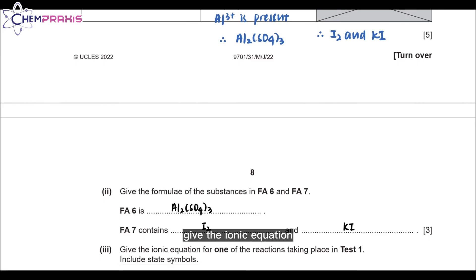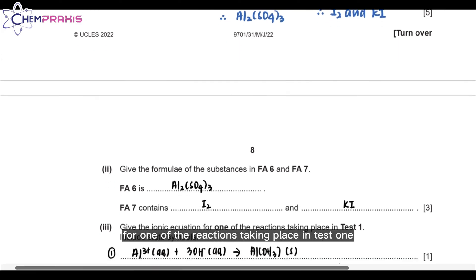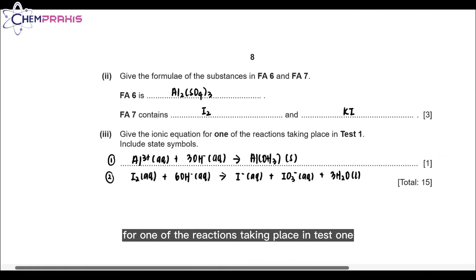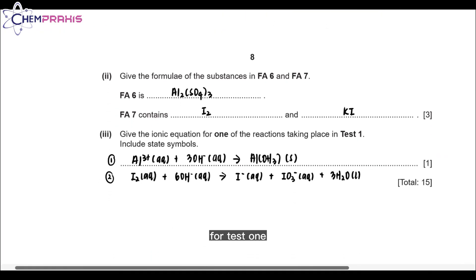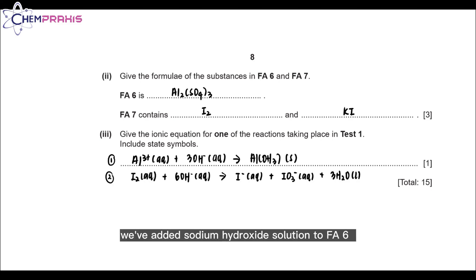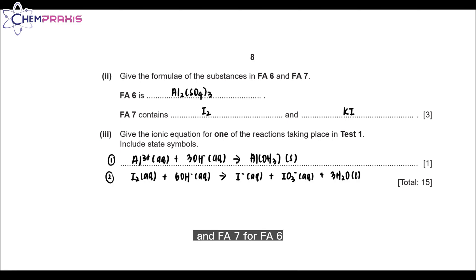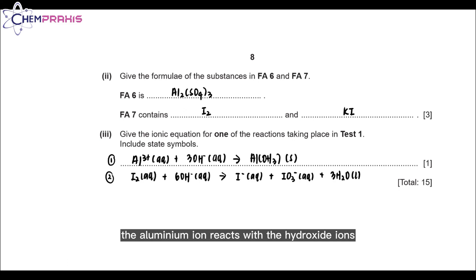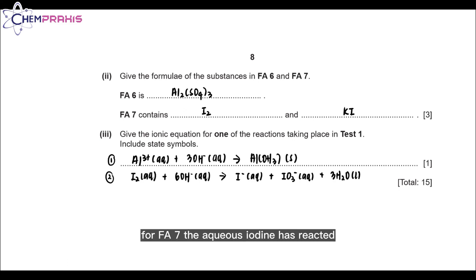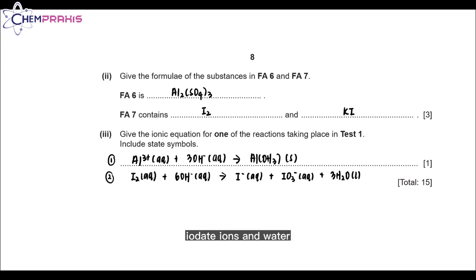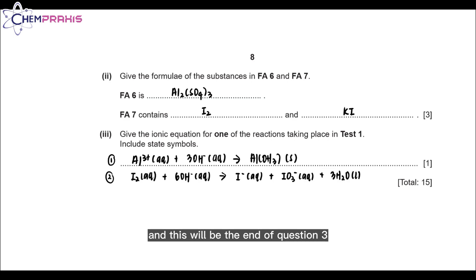Moving on to Question 3C, give the ionic equation for one of the reactions taking place in test 1. We added sodium hydroxide solution to FA6 and FA7. For FA6, the aluminium ion reacts with hydroxide ions to form aluminium hydroxide solid. For FA7, aqueous iodine reacts with hydroxide ions to form iodide ions and water. This concludes Part B and Question 3.